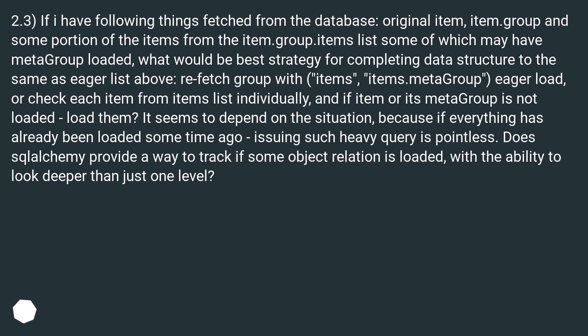2.3: If I have the following things fetched: the original item, item.group, and some portion of items from item.group.items — some of which may have metagroup loaded — what would be the best strategy for completing the data structure? Options include: refetch group with items and items.metagroup, or check each item from the items list individually and load any item or metagroup not yet loaded. It seems situation-dependent, because if everything was loaded some time ago, issuing a heavy query is pointless. Does SQLAlchemy provide a way to track if a relation is loaded, with the ability to look deeper than one level?